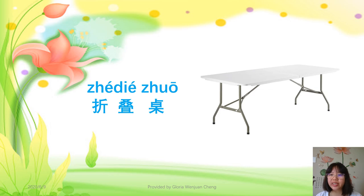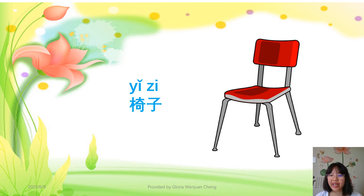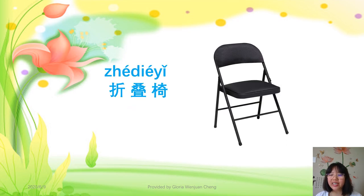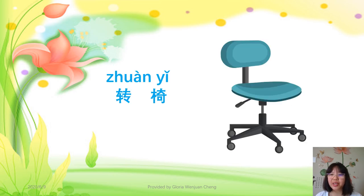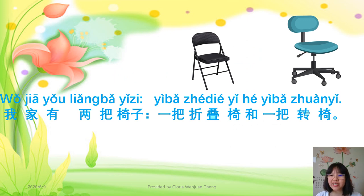折叠桌 — 折叠, both second tone, means to fold or folding. 折叠桌 means folding table. 桌椅 means table and chair. 折叠椅 means folding chair. 转椅 — 转 means turn around, so 转椅 is a revolving chair.